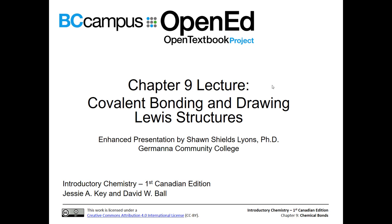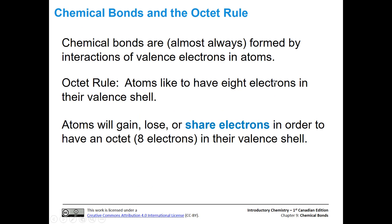Covalent bonding and drawing Lewis structures. Let's remind ourselves about chemical bonds and the octet rule. Valence electrons in atoms interact to form chemical bonds with other atoms. The octet rule is an extremely useful tool because it tells us that atoms like to have eight electrons in their valence shell.